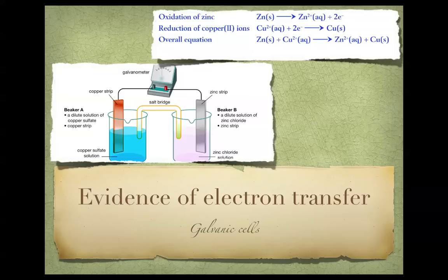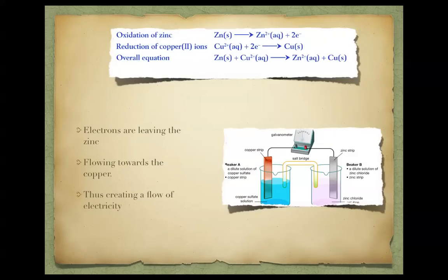A galvanic cell looks like two beakers with two metal strips in a solution, connected by a voltmeter that measures voltage. We can also measure current, but we normally measure voltage. They're connected in the middle by a salt bridge, because one side is losing electrons and the other is gaining electrons. The salt bridge is there to balance out the charges that have been lost or gained from each side.